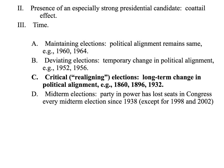Under the topic of time, there are different types of elections. Maintaining elections are where things mostly stay the same — states voted the way you expected. Deviating elections involve a temporary change, but people return back to their old ways. Then there are critical or realigning elections, where people vote a different way than they did before and keep voting that way, maybe for the rest of their life.